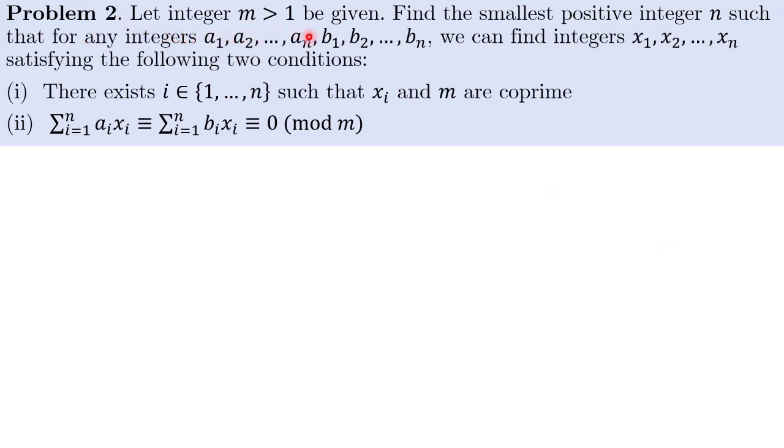Let integer m greater than 1 be given. Find the smallest positive integer n such that for any integers a1 to an, b1 to bn, we can find integers x1 to xn satisfying the following two conditions. First, there exists an index i such that xi and m are coprime. Second, sum of aixi and sum of bixi are both divisible by m.